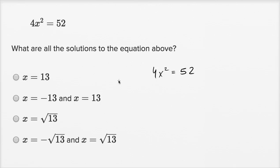Well, if we want to solve for x, we can just divide both sides by 4. And then we get x squared is equal to - 52 divided by 4 is 13.